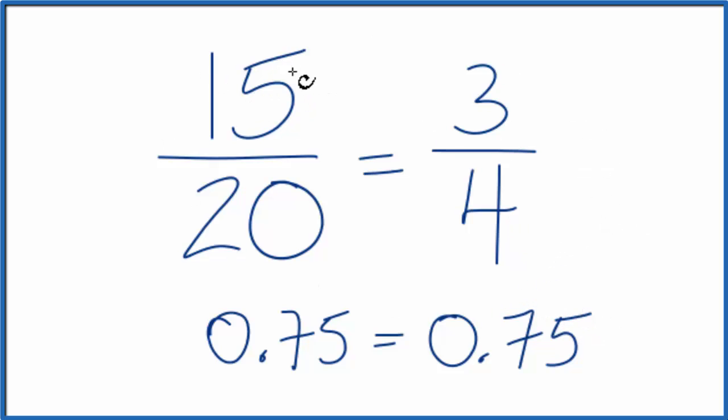It's just that we've reduced or simplified 15 over 20 to its lowest terms, 3 4ths. This is Dr. B. Thanks for watching.